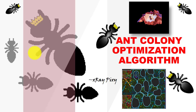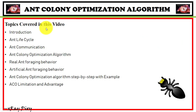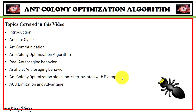In this video, you will learn what the Ant Colony Optimization algorithm is all about and how it works step by step with an example. Topics covered include: introduction, ant life cycle, how ants communicate, what this algorithm is about, real and artificial ant foraging behavior, and the ACO algorithm step by step with an example.